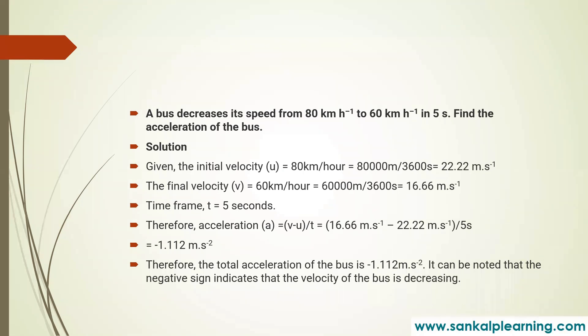A bus decreases its speed from 80 kilometer per hour to 60 kilometer per hour in five seconds. Find the acceleration. Here we need to calculate the acceleration. The initial speed is 80 kilometer per hour and the final speed is 60 kilometer per hour. Time is 5 seconds. First, we need to convert these speeds from kilometer per hour into meter per second.